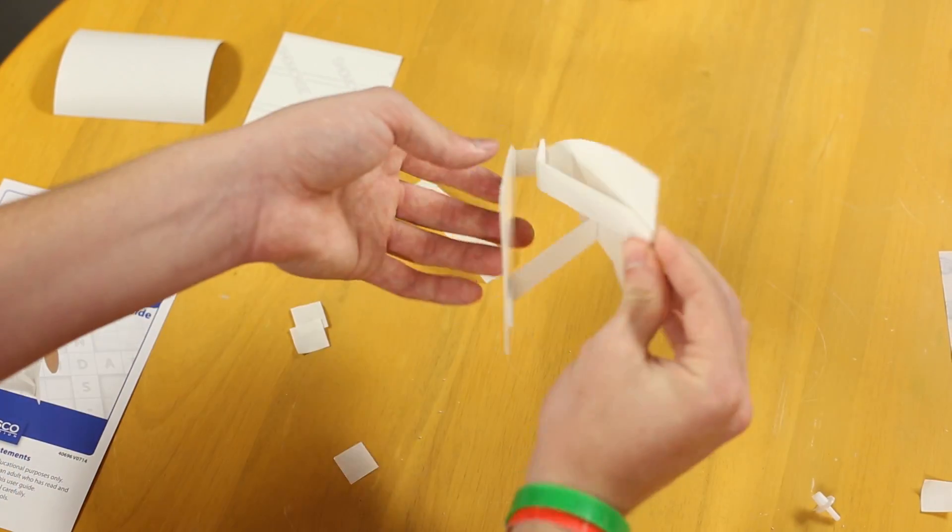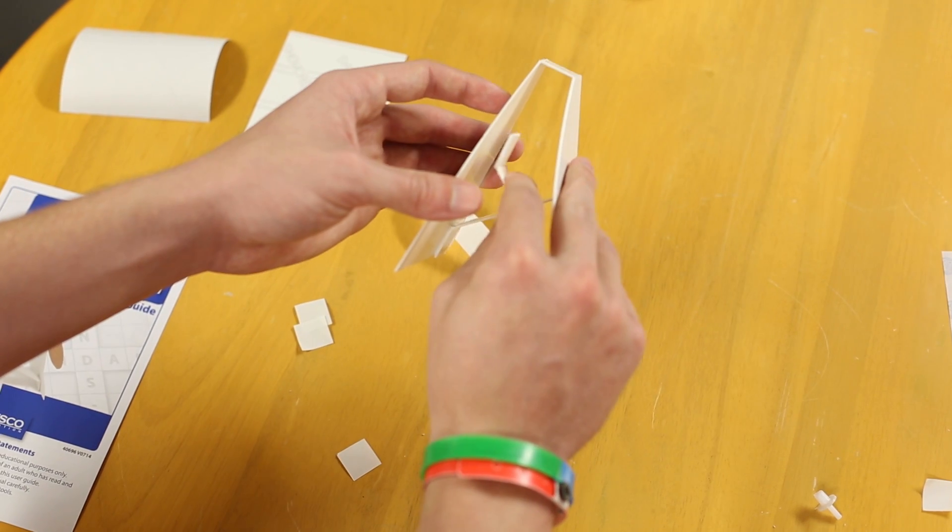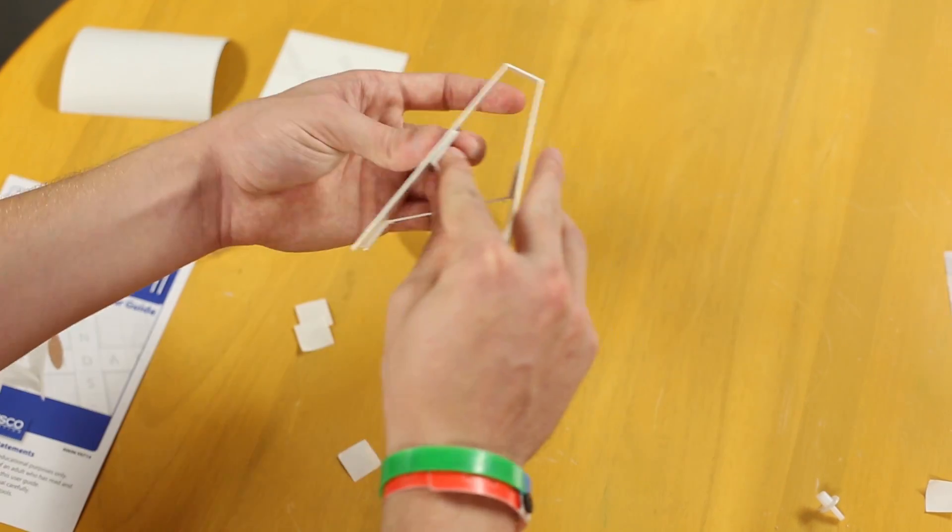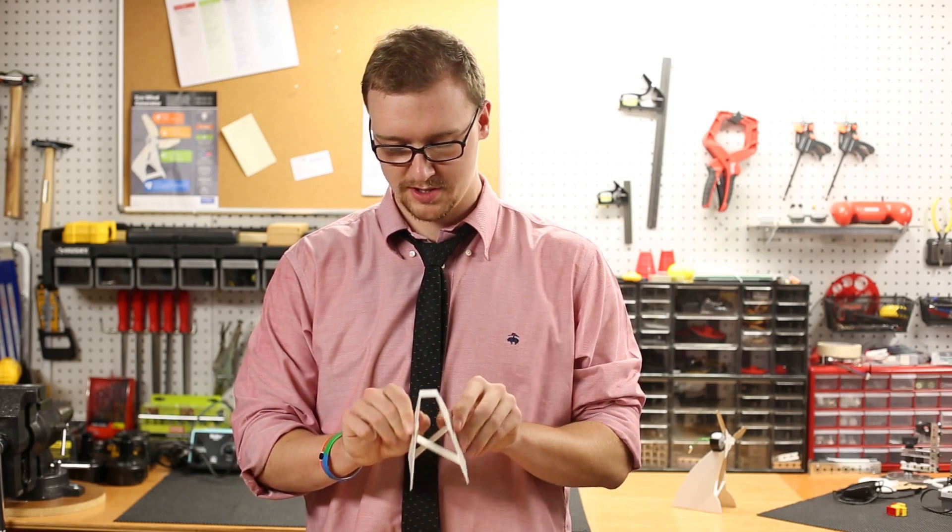Now you're going to do the same for the back part. The finished product should be crossing.